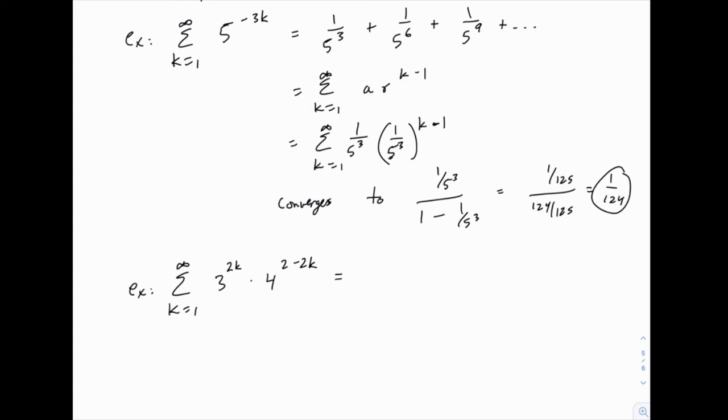If you let k equal 1, you have 3 to the second power, which is 9, times 4 to the power of 2 minus 2, which is 0. So you'll have 3 squared times 4 to the 0, which is 1, so your answer is just 9. If you repeat that when k equals 2, you get 81 over 16 because you'll have 3 to the fourth power times 4 to the negative second. So the 4 squared in the denominator becomes 16, and then if you repeat this, this pattern keeps on going.